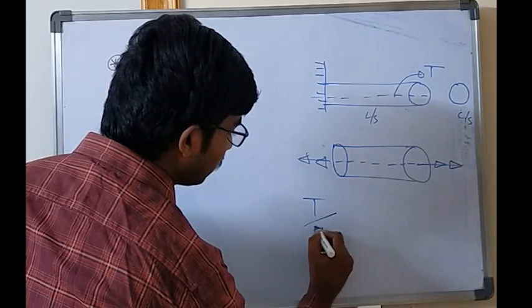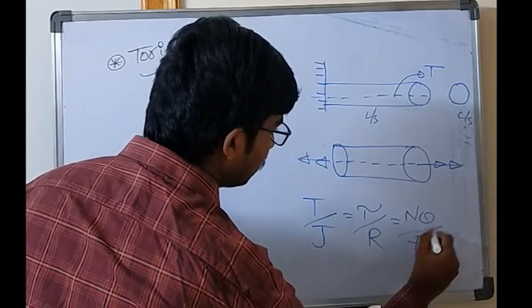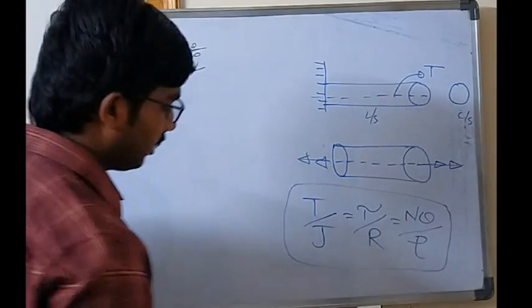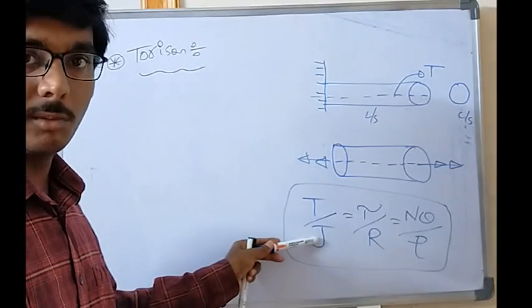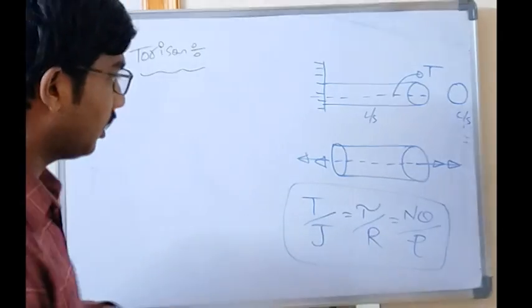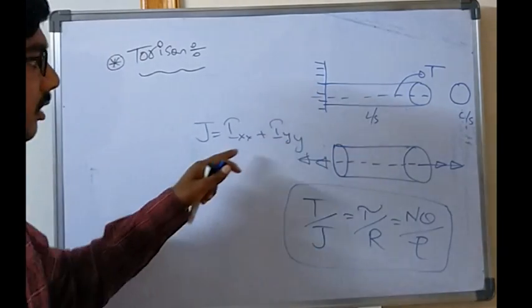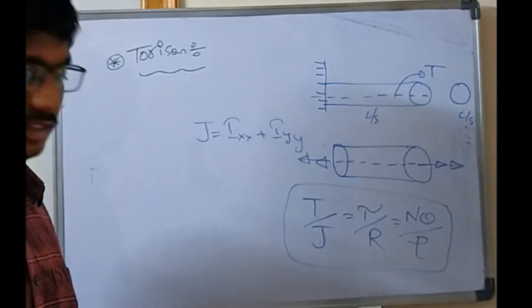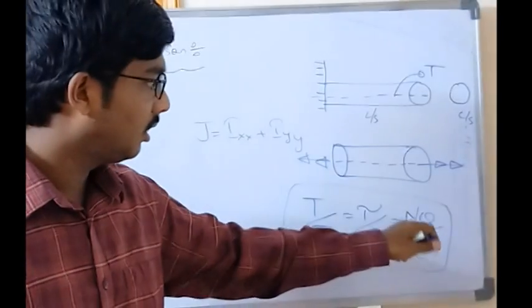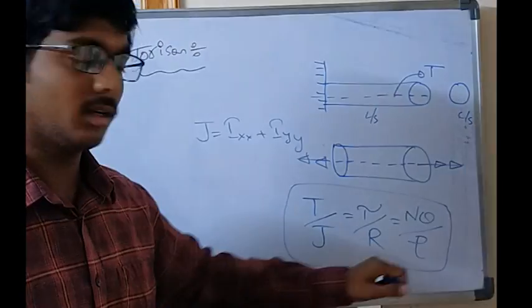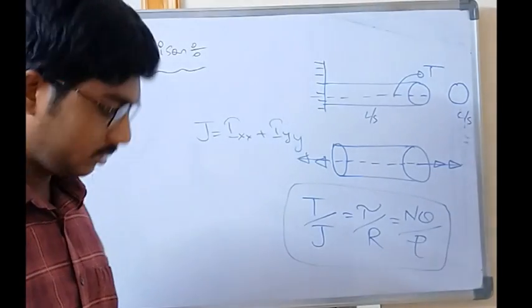One equation — similar to the bending equation — is the torsional equation: T/J = τ/R = Gθ/L. Here, T is the torque, J is the polar moment of inertia, τ (tau) is the shear stress, R is the radius, G is the shear modulus, θ (theta) is the angle of twist, and L is the length of the member.